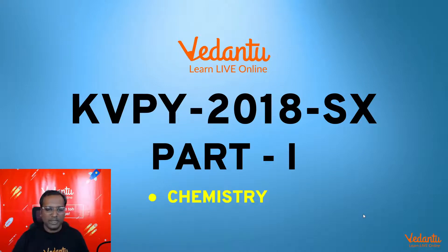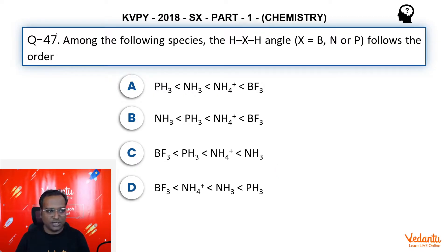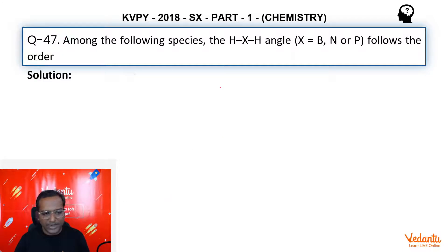Hey guys, my name is Shubhan Garodia, chemistry master teacher at Vedantu. Today we are going to talk about KVPY 2018 SX, that's 12th standard, part 1, chemistry subject, question number 47. Among the following species, the HXH bond angle follows the order and we have been given four species. So let's quickly draw the structures and let's try and understand.